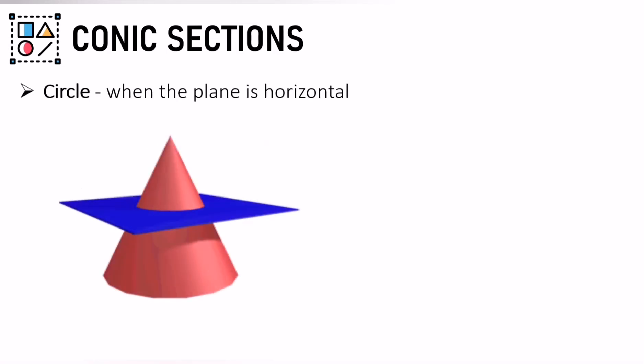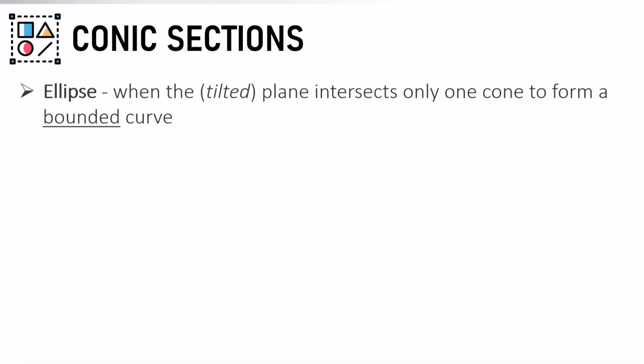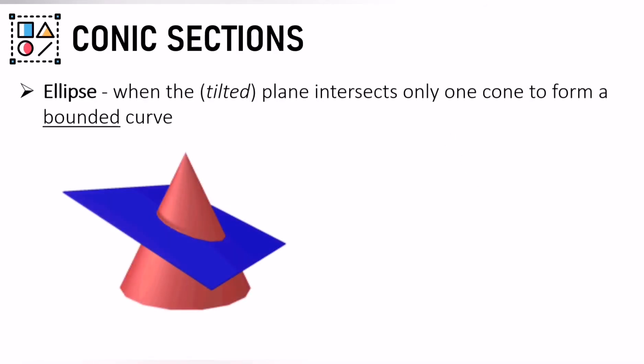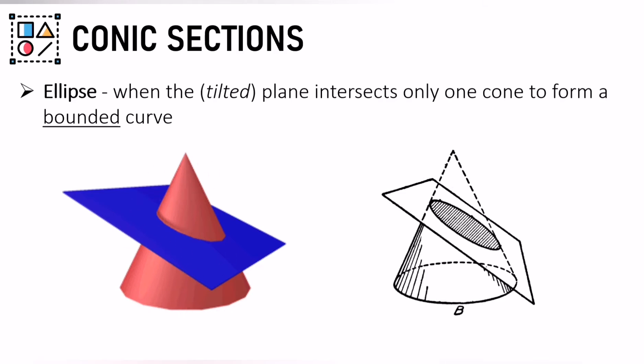Circle is formed when the plane is horizontal just like this one. Ellipse is formed when the tilted plane intersects only one cone to form a bounded curve. So this one, and then you form a bounded curve that is an ellipse.